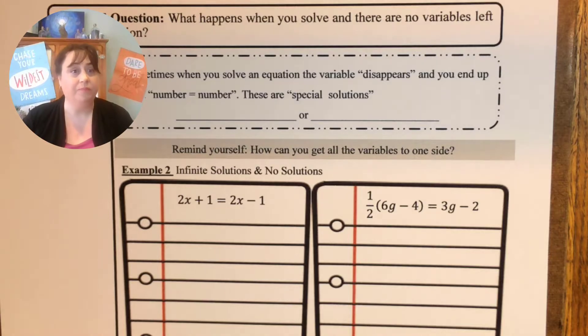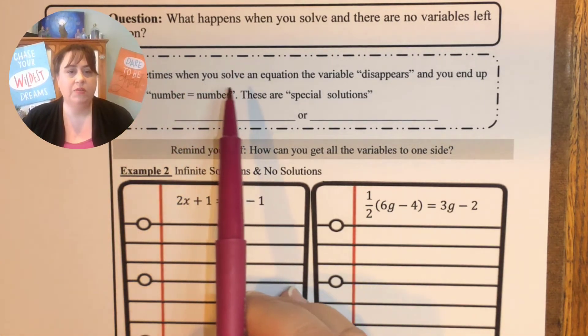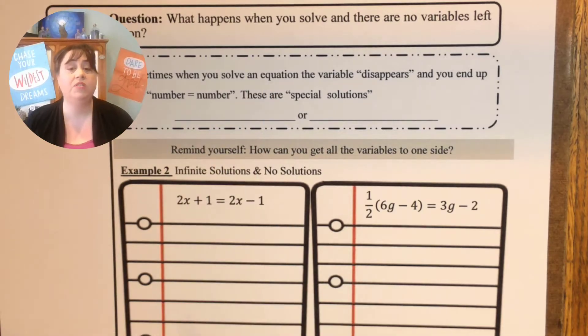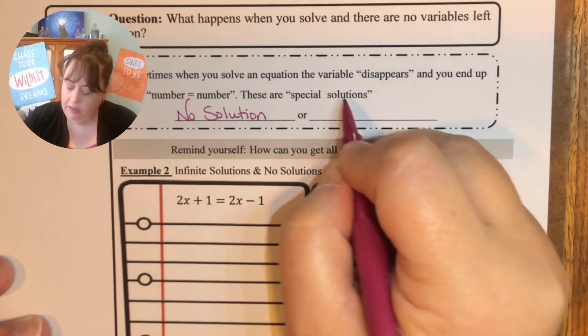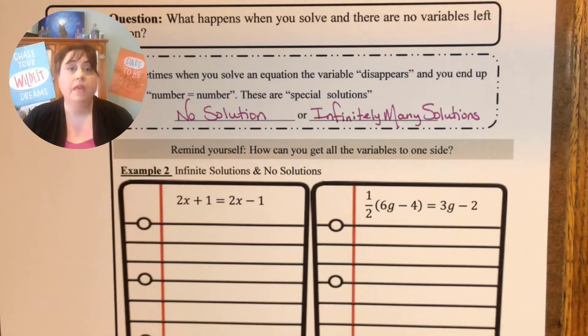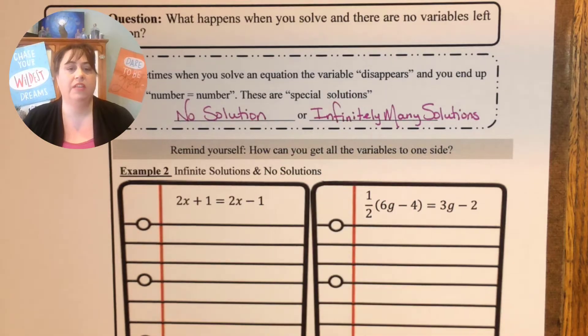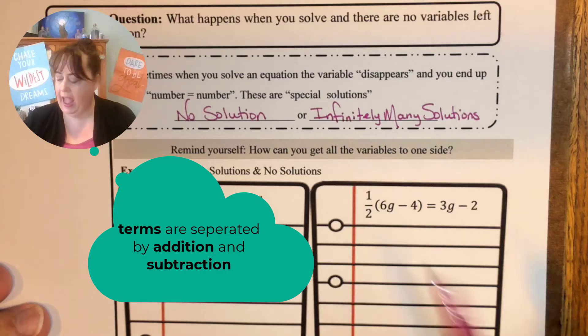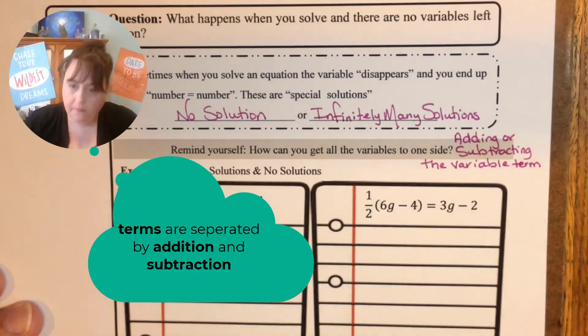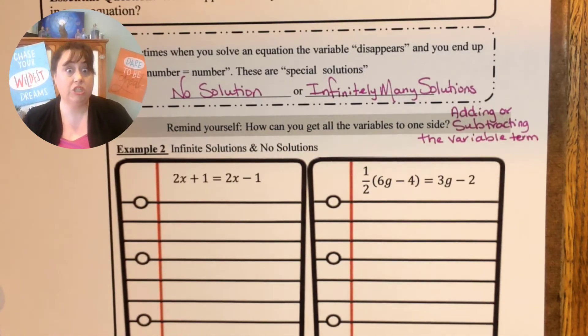So let's begin. Sometimes when you solve an equation the variable is going to disappear and you end up with this thing where a number equals a number and these are very special solutions. They are either no solution or infinitely many solutions. Sometimes you'll hear people refer to infinitely many solutions as just infinite solutions. Both are correct. We need to remind ourselves how can you get all the variables to one side and remember you do that by adding or subtracting the variable term.